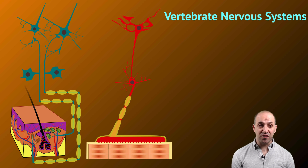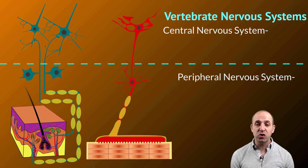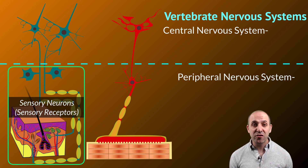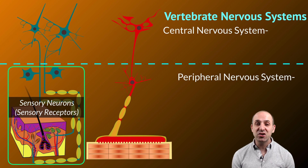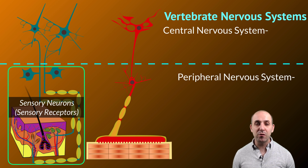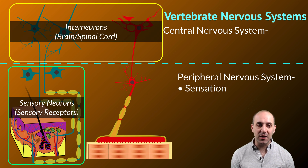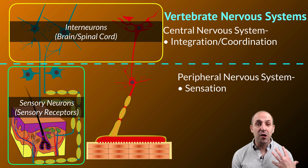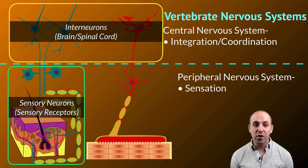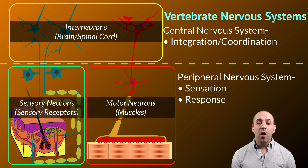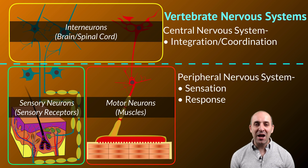We're going to focus for the rest of this video on vertebrate nervous systems and how they're arranged. Generally, we structure this in two major divisions: our central nervous system and our peripheral nervous system. The peripheral nervous system is where our sensory receptors live — sensory organs with sensory neurons attached to them, things like receptors in our skin, or our eyes or ears. These receptors take in information and turn it into action potentials that are sent to our central nervous system — the brain and spinal cord. The function of the central nervous system is integrating that incoming sensory information and coordinating a response.